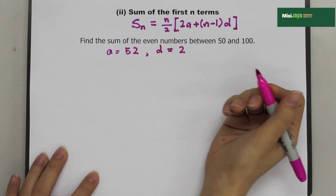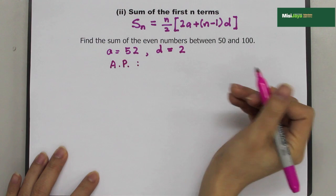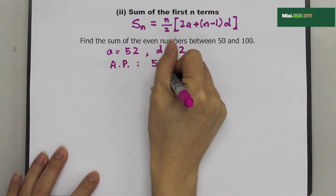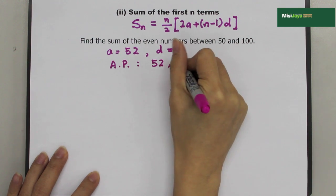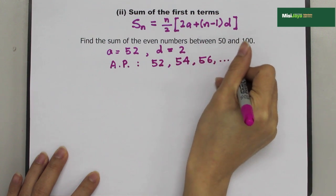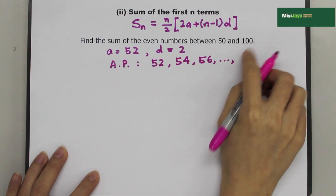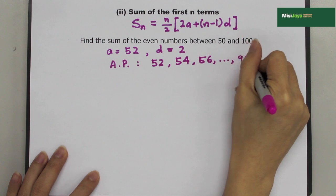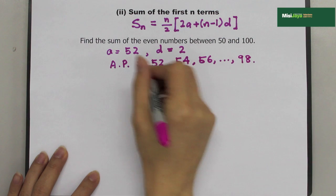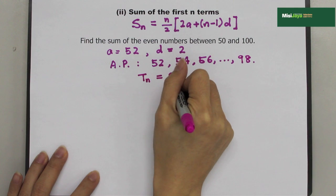We list down the AP: 52, then plus 2 gives 54, 56, and so on. The last term — the even number before 100 — is 98. So, TN equals 98.